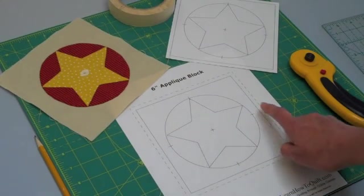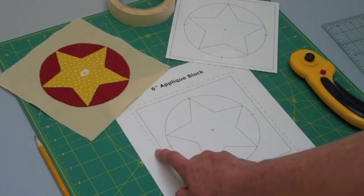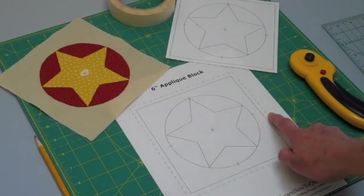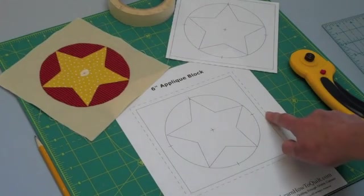But we need to put seam allowance on it. So there's a quarter inch here, a quarter inch here, so from this edge to this edge is 6.5 inches.